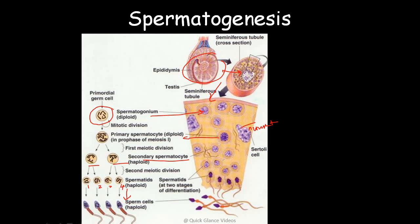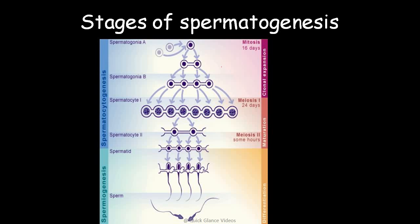The Sertoli cells provide nourishment to the sperm until they are released. To summarize the complete flow: when the male reaches maturity, mitotic division occurs in the multiplication phase; then during the growth phase the primary spermatocytes are produced; then the second meiosis gives rise to four spermatids which are haploid; and ultimately sperm is produced. Remember this diagram to recall all the stages.